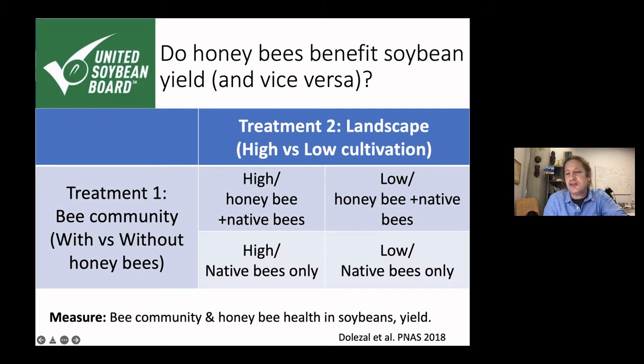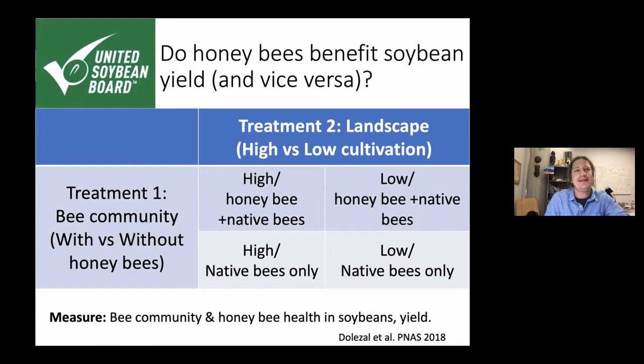We published this data in the Proceedings of the National Academy of Sciences, in part because we saw something really interesting: honeybees thrived in this landscape regardless of the level of cultivation, but by August, no matter where they were, they all started losing weight. We could reverse that weight loss by giving those bees access to prairie — which is something I'll talk about a little bit later.